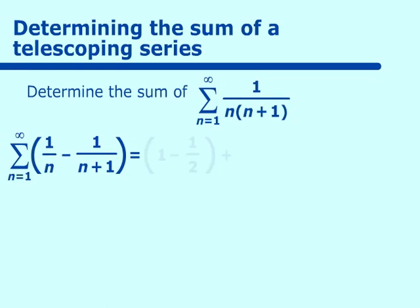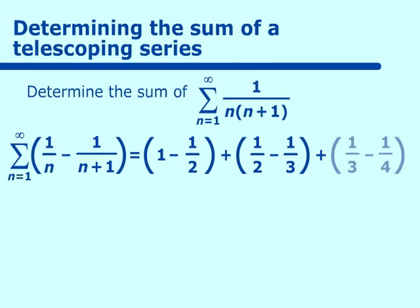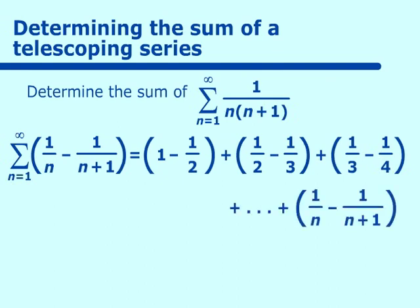We get 1 minus 1/2 when we put in 1. When we put in 2, we get 1/2 minus 1/3. When we put in 3, we get 1/3 minus 1/4, and this will go on forever until we get 1/n minus 1/(n+1).